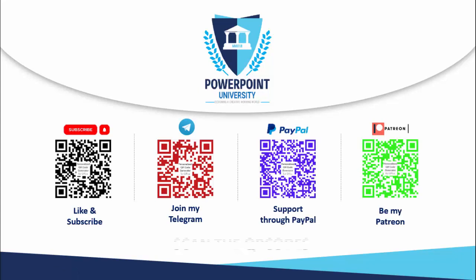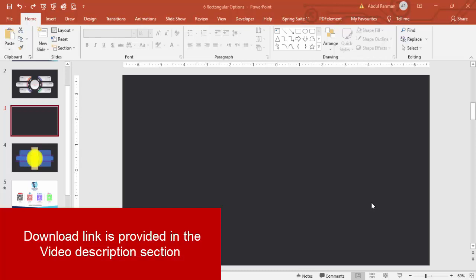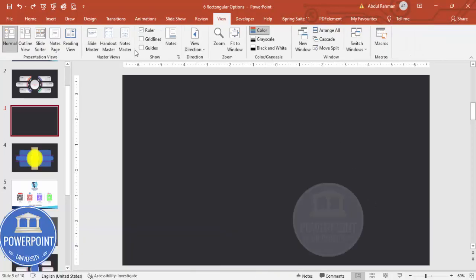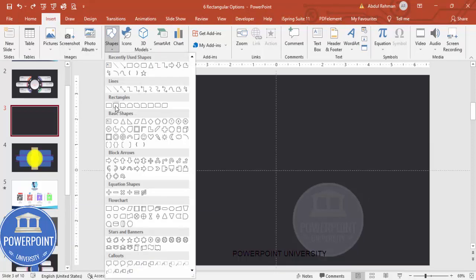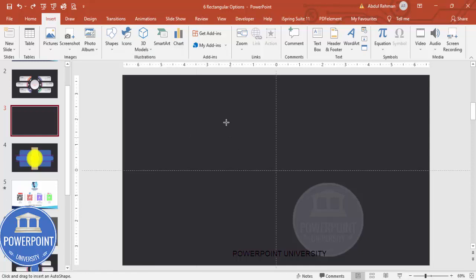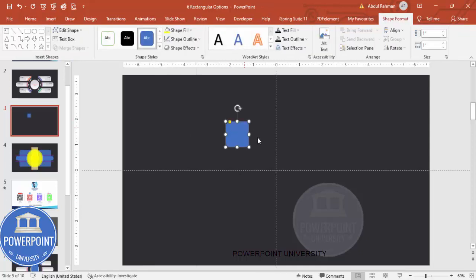Let's start the tutorial. Add a new slide and change the background to any dark color. Then go to View and enable the guides. Go to Insert > Shapes, and from the rectangles choose the rounded corner rectangle — click it to create one rounded corner rectangle. Now I'm going to change the height and width.